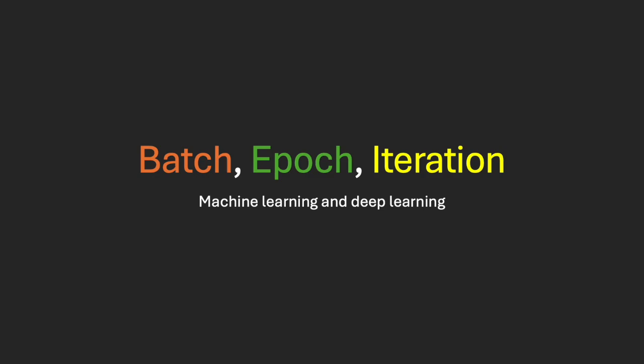Batch, epoch, and iterations — the three building blocks of training a deep learning neural network. In this video we will explore each one of them in detail.